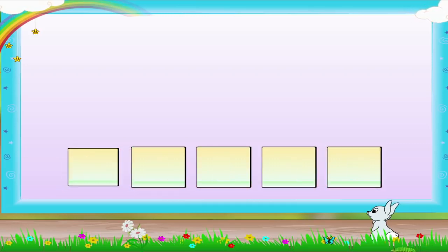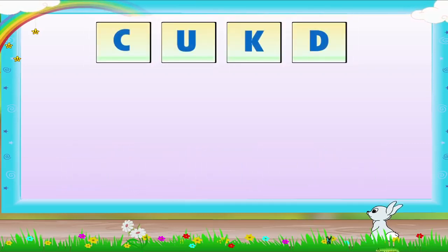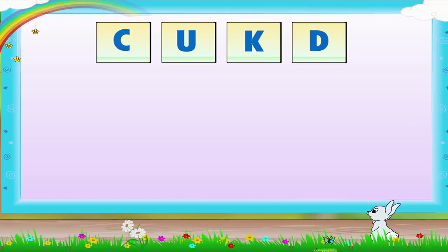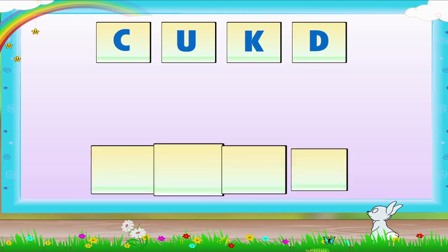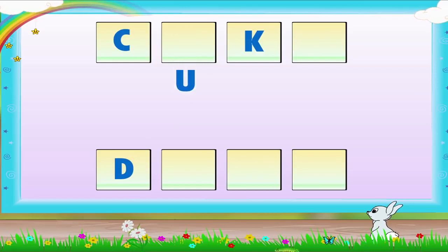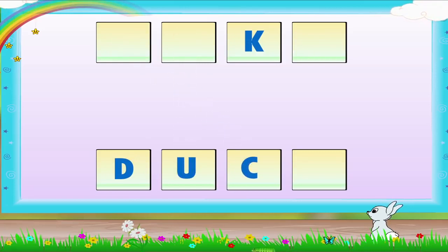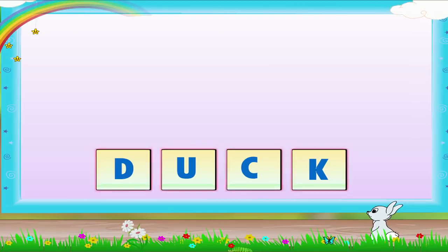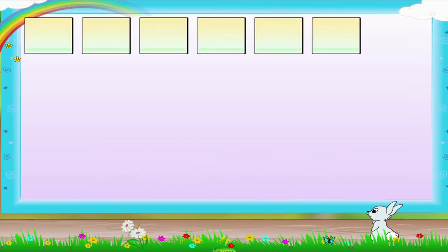What about these letters? It is C, U, K, T. Good. It is D, U, C, K. Duck.